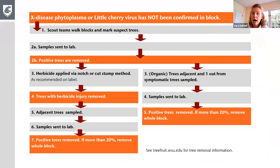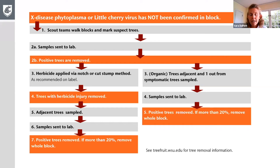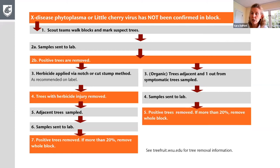If you're in a block that does not have Little Cherry virus 2 or X phytoplasma confirmed, scout those blocks, mark suspect trees, and send samples to the lab to confirm whether you have a problem. Then remove infected trees using the herbicide cut-stump method or by pulling trees and removing as many roots as possible. If using glyphosate herbicide and adjacent tree roots are grafted, that tree will show herbicide injury, indicating it was likely root-grafted and already infected — it should be removed immediately. Also sample the adjacent tree, one tree out, to see if it's also infected.